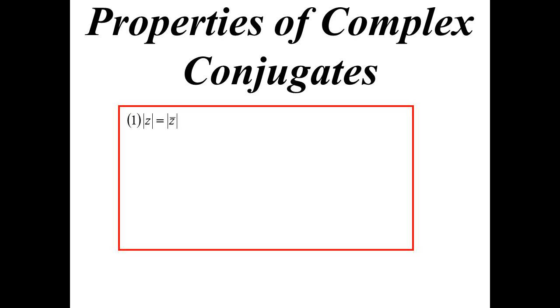So the modulus of z must always be the same as its conjugate, because it's a reflection in the x-axis, so the distance to the origin of both of them, or the length of those vectors, must be the same. It's just that one's reflected below, but they're still going to have the same length. Whereas the arguments will be the negative of each other, because one will be going up, one will be going down.